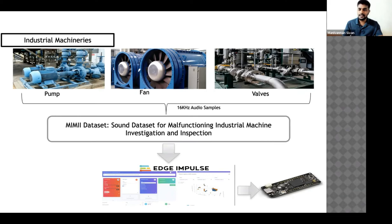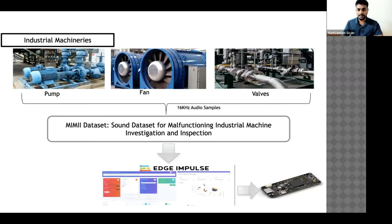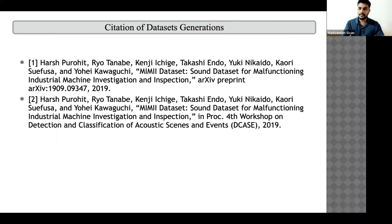I used this open source data and uploaded all samples to Edge Impulse, which is very user-friendly and free for developers. You can create a free account and try it out. Edge Impulse makes it easy to deploy back to the Arduino Portenta H7. The two journal papers I referenced explain in detail how data was collected for each type of machinery.